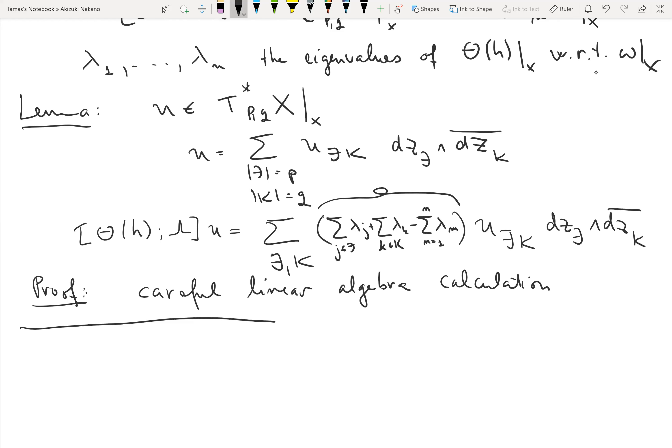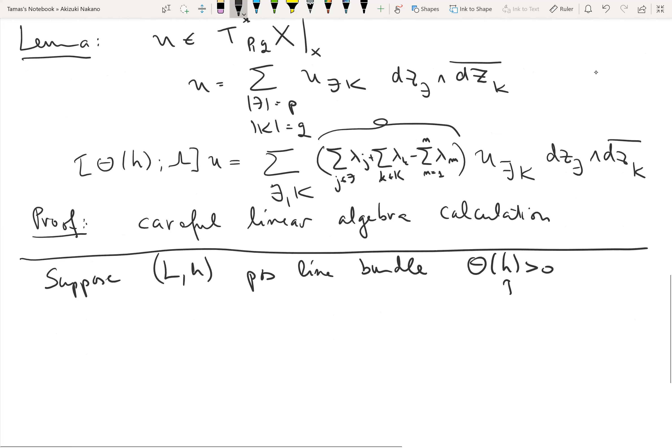Going forward, I'm going to assume that (L,h) is a positive line bundle. In particular, that means theta_h is positive definite, which is the same as saying all the lambda_1 to lambda_n above are positive.